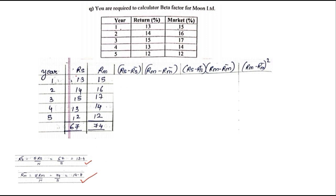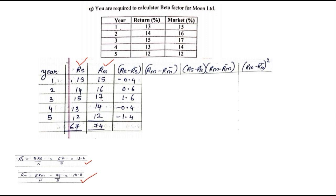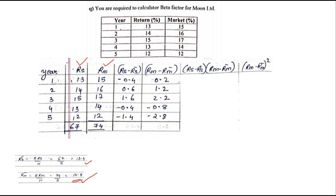Now we compute RS−RS̄ for all values: 13−13.4=−0.4, 14−13.4=0.6, 15−13.4=1.6, 13−13.4=−0.4, 12−13.4=−1.4. Similarly, RM−RM̄: 15−14.8=0.2, 16−14.8=1.2, 17−14.8=2.2, 14−14.8=−0.8, 12−14.8=−2.8.